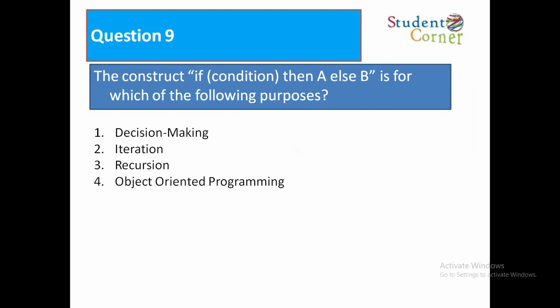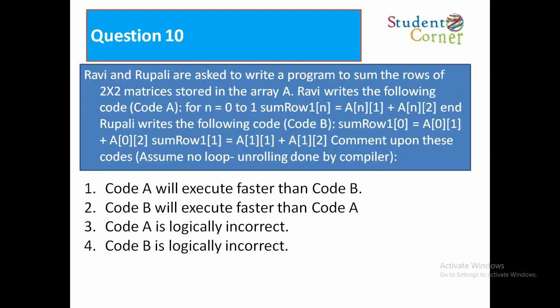The construct if condition then A else B is for which of the following purposes? Option 1: decision making, option 2: iteration, option 3: recursion, option 4: object oriented programming. The answer is decision making.